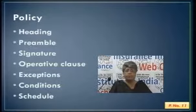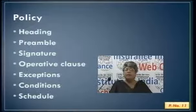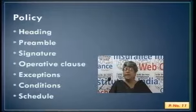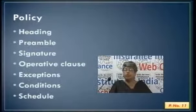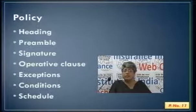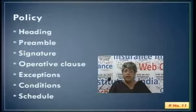When we look at the policy document, the first thing we notice is the heading — usually the logo of the insurance company, the name of the company, and its registered office. The next is the preamble, also called the recital clause. This is the first part of the insurance policy where it is stated that the insured has entered into a contract with the insurance company for the purpose of these terms and conditions. The preamble states the names of the parties entering into the contract.